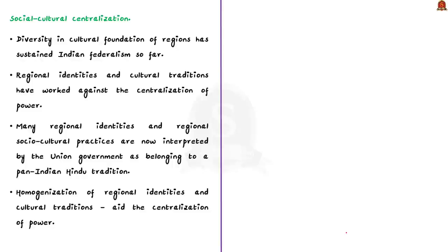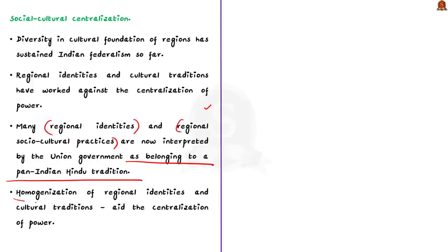So far we have discussed centralization of political power, economic power, and institutional transgressions. Now regarding social and cultural centralization — according to the author, diversity and cultural foundations of regions have sustained Indian federalism. Regional identities and cultural traditions have worked against centralization. But the current union government is challenging these regional identities, interpreting many regional socio-cultural practices as belonging to a pan-Indian Hindu tradition, leading to homogenization of regional identities that aids centralization of power.